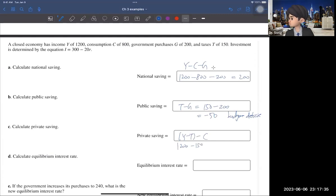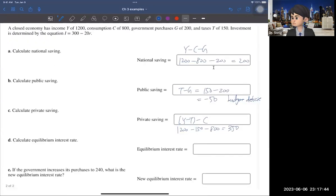Now private saving is your disposable income minus consumption. So $1,200 minus tax $150 minus consumption $800. Then it gives you $350.